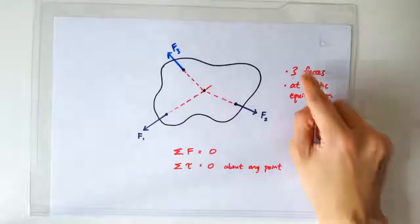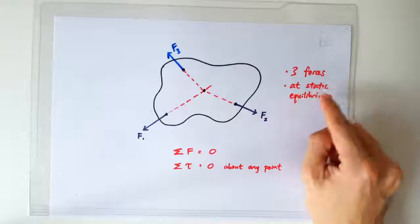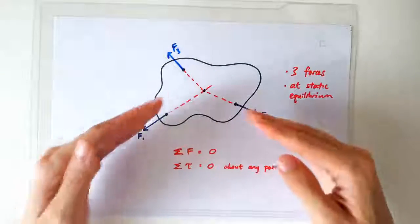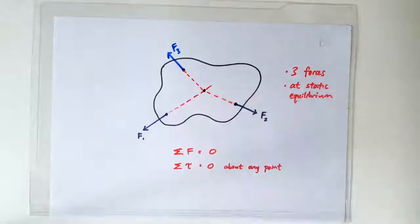That's why we have this rule. If an object experiences only three forces, and the object is at static equilibrium, then the three forces, if they intersect at all, they must intersect at the same point.